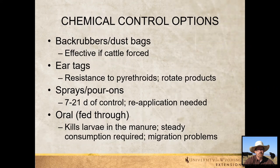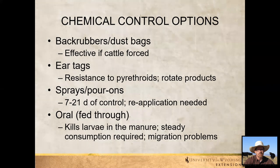Back rubbers and dust bags are effective if you can force cattle to go under and rub on them — such as at a water point with a gate that constricts their movement. If you can't do that, it may not work. Ear tags can be effective, but horn flies can develop resistance to pyrethroids. If you use ear tags, you need to rotate products from year to year and remove old tags in the fall — you don't want them staying in over winter with only a low level of chemical remaining. Sprays and pour-ons are not season-long — maybe one to three weeks of control — so you'll need to reapply through the season.